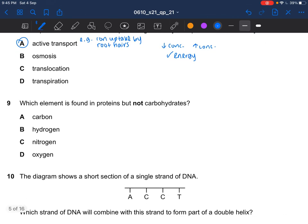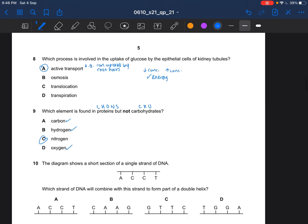Next question. Which element is found in proteins but not carbohydrates? Carbohydrates have carbon, hydrogen, and oxygen. For proteins, carbon, hydrogen, oxygen, nitrogen, and sulfur. So it is C. Carbohydrates do have carbon, do have hydrogen, do have oxygen. So the answer is C.